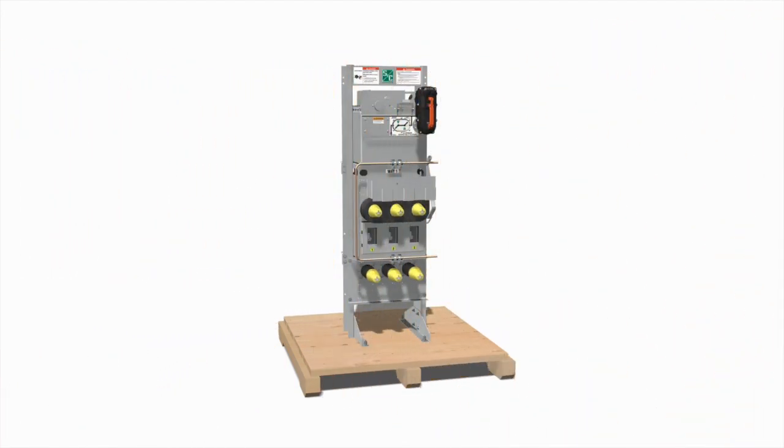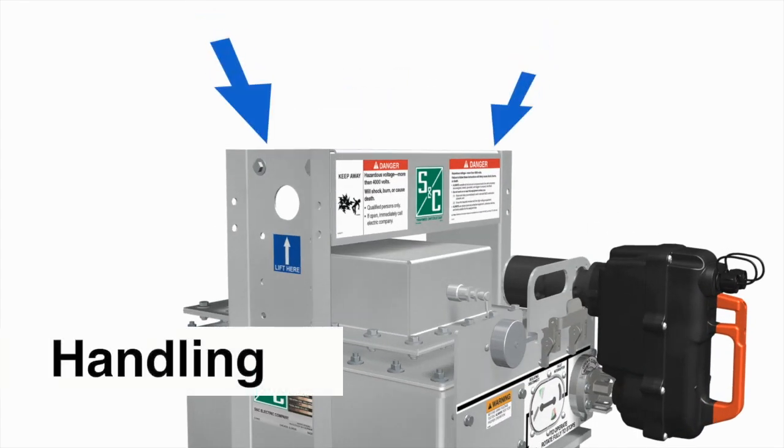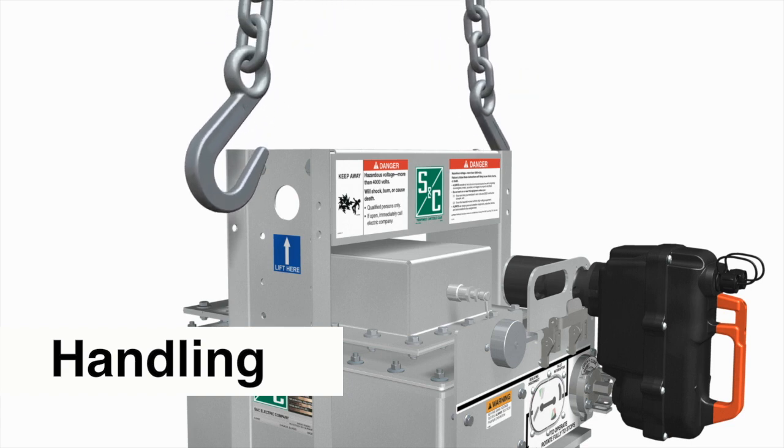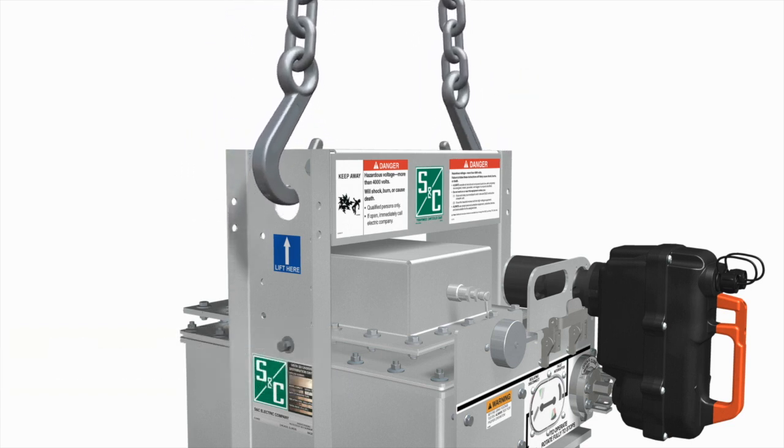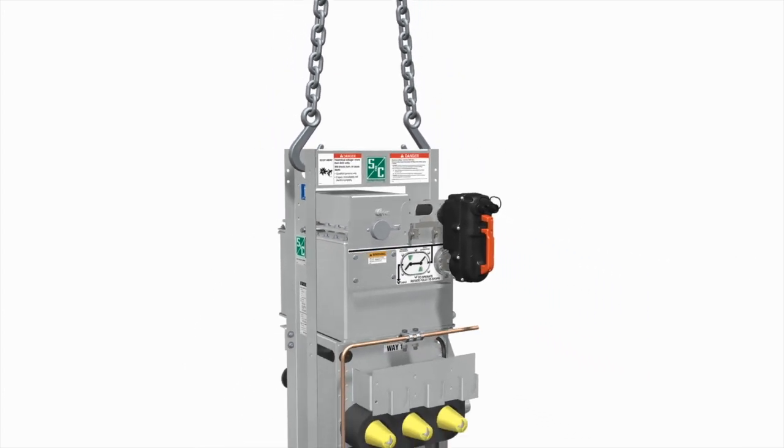Remove the crating from around the switchgear assembly and attach the lifting slings. Use 6 foot or 183 centimeter lifting slings of equal length to lift the vault-mounted switchgear.